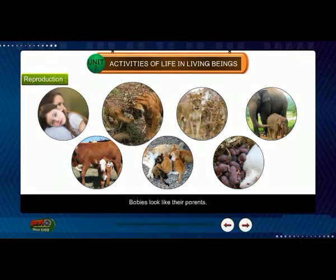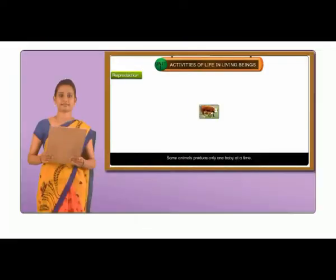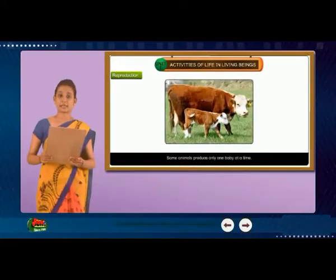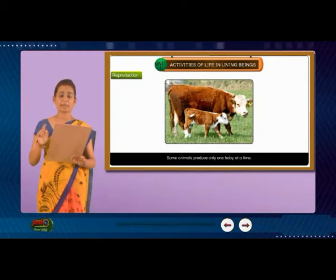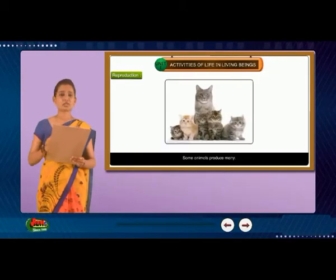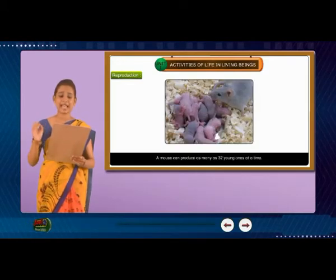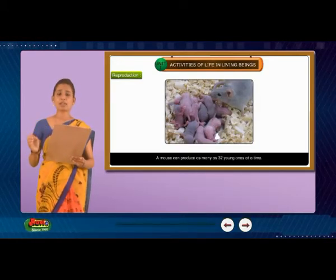Babies look like their parents. Some animals produce only one baby at a time. Some animals produce many — a mouse can produce as many as 32 young ones at a time.